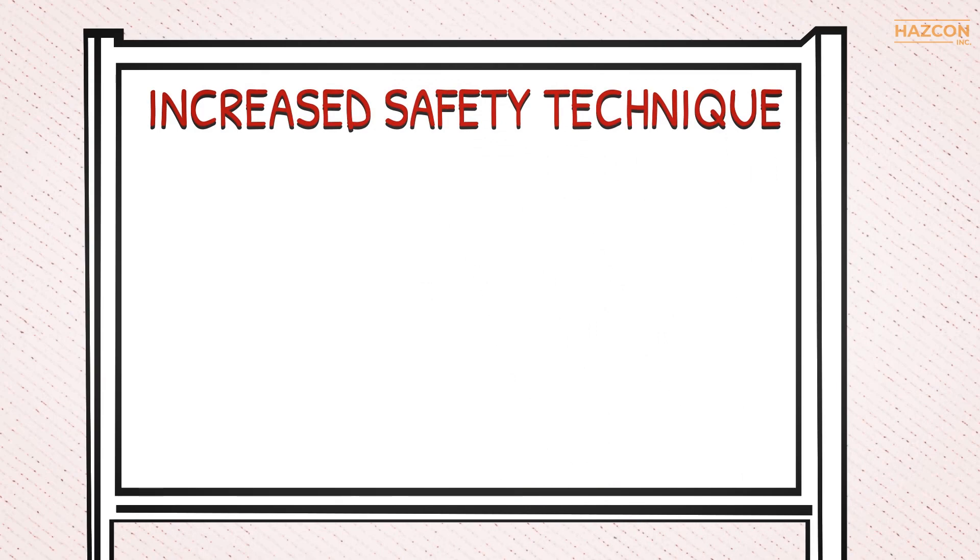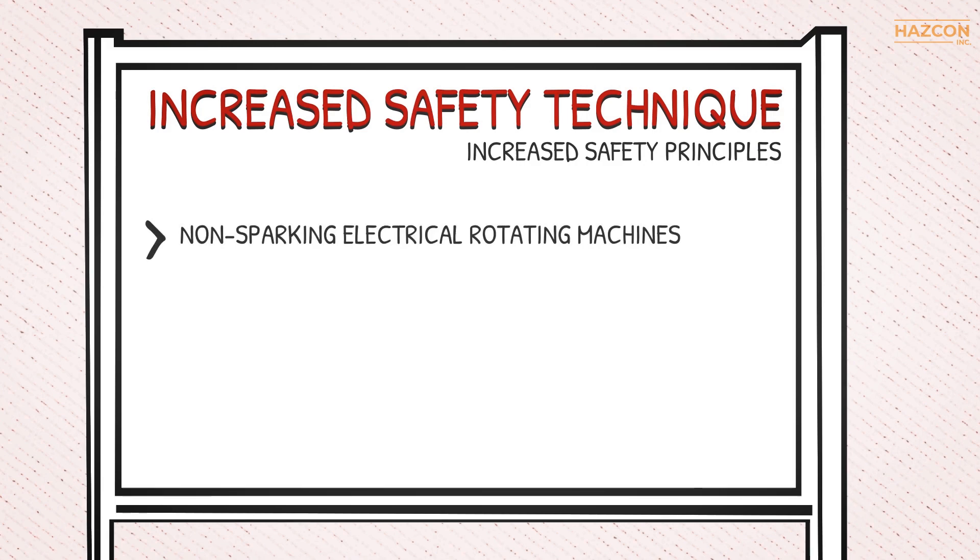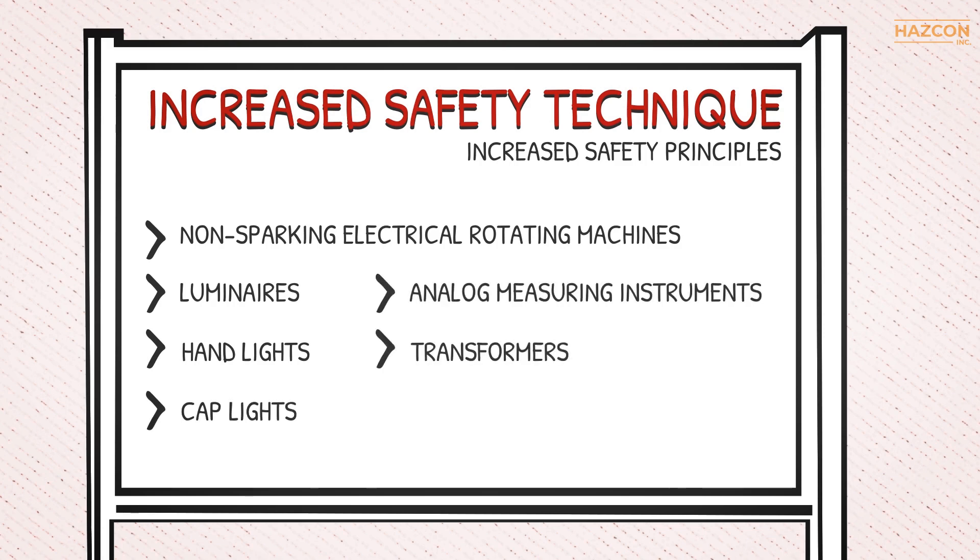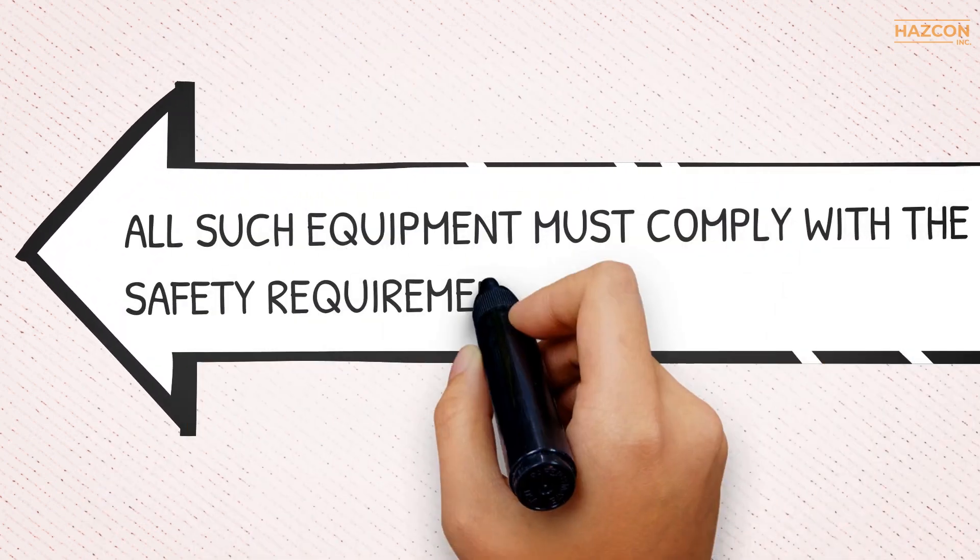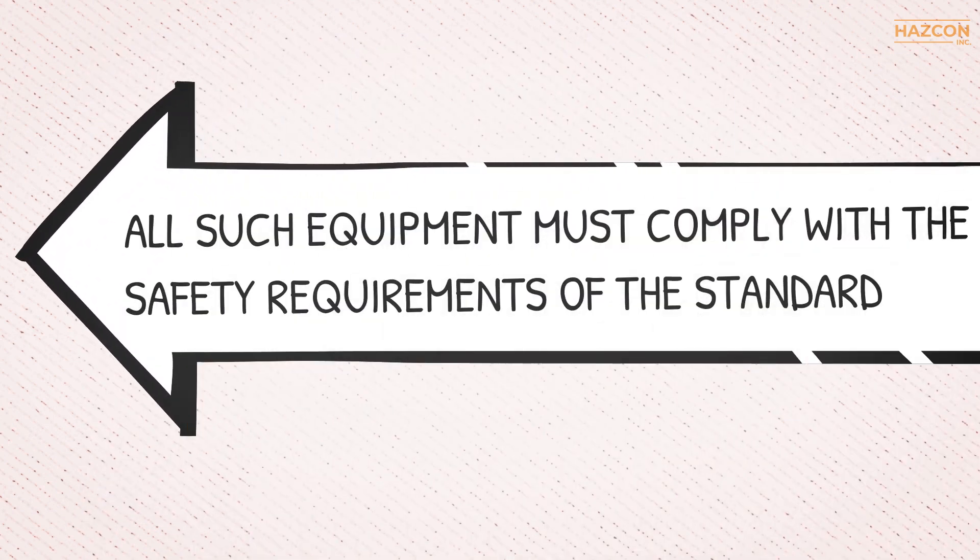Certain products may also use the increased safety technique if they comply with the standards and are designed based on increased safety principles. Examples of such devices are non-sparking electrical rotating machines, luminaires, hand lights, cap lights, analog measuring instruments, transformers, and resistance heating equipment. All such equipment must comply with the safety requirements of the standard.